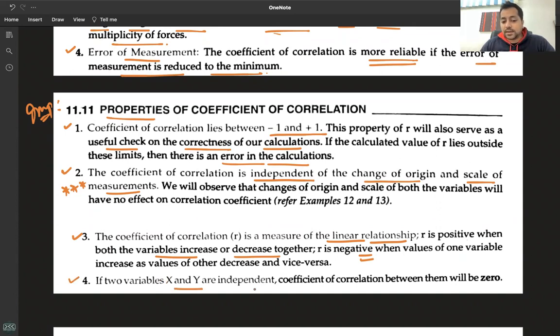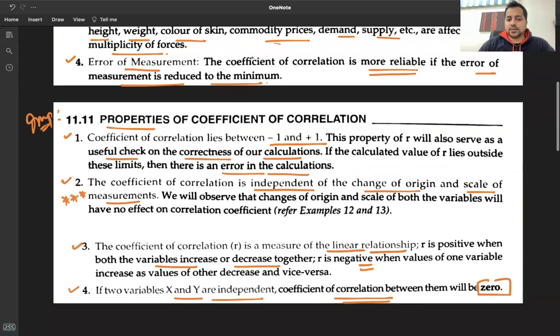If two variables X and Y are independent, the coefficient of correlation between them is zero. Independent means one variable is not dependent on the other. For example, salary and height, or weight and marks—when variables are independent of each other, the correlation between them is zero.